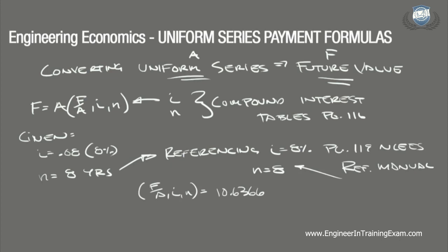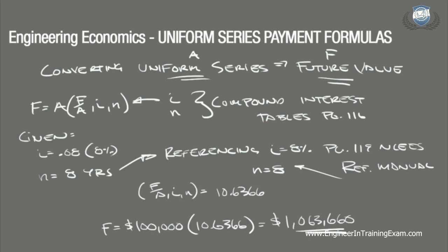Plugging this value into the equation, we get F = $100,000 × 10.6366, which equals $1,063,660. So the equivalent at the end of 8 years after investing $100,000 annually at an 8% yield will be $1,063,660.